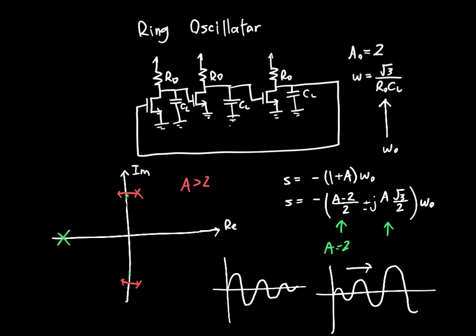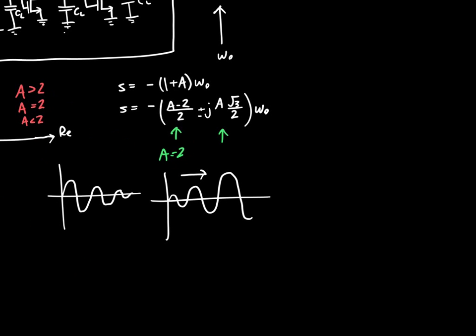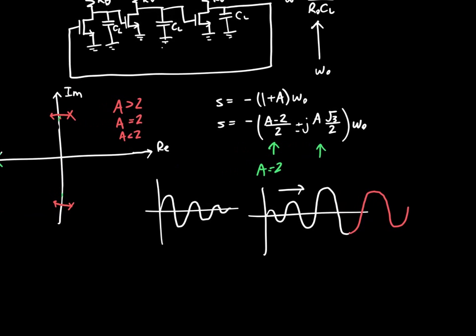And at some point, the gain is going to get compressed to A is equal to 2 or A is less than 2. And if A is less than 2, then our signal will start to shrink. So it was growing, but now A becomes less than 2, so it starts to shrink. But then, as it shrinks, the poles move again. So they move back into the right half plane because the amplitude is smaller, and so the gain gets closer to the DC gain, so the gain starts to increase. Let's say that this is actually, let's do this in green. So the amplitude, again, starts to grow.